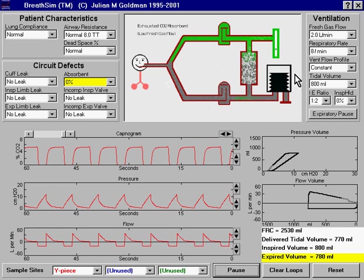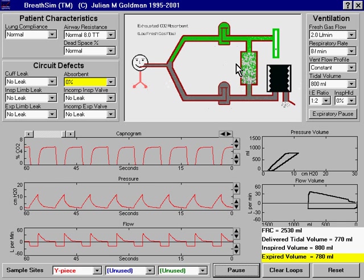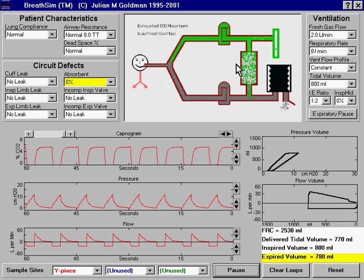At the next breath, gas which leaves the ventilator bellows and moves through the absorber is cleansed of CO2. However,